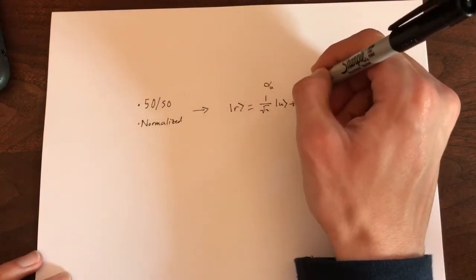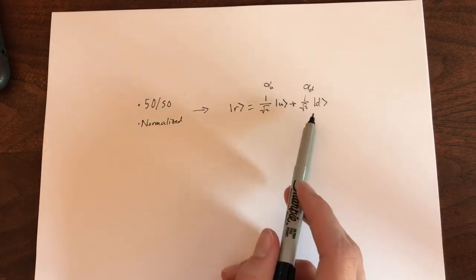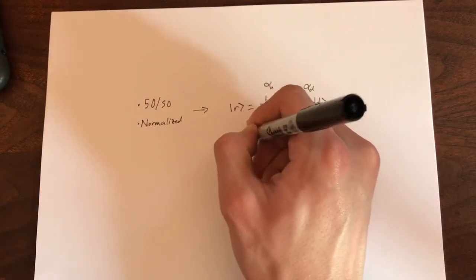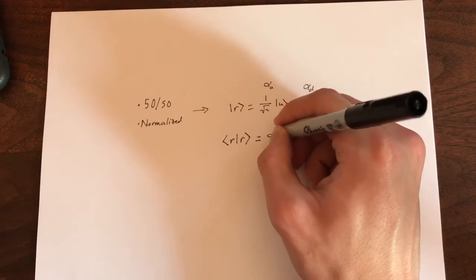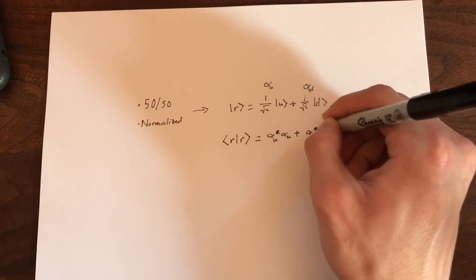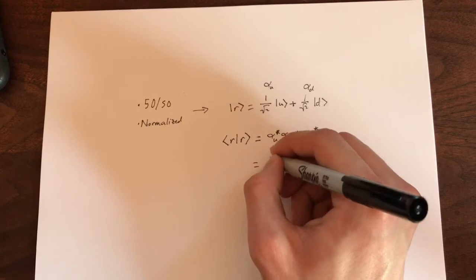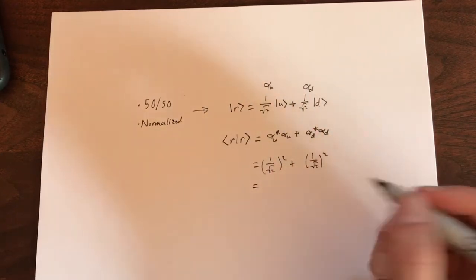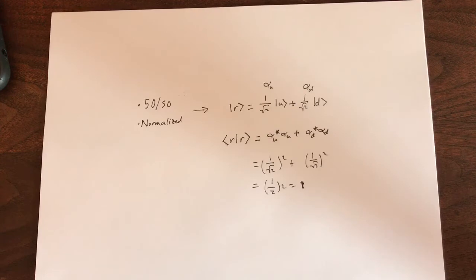This is alpha up and this is alpha down. Since these two are equal, we know that there must be a 50-50 chance of them being chosen. However, how do you know that it's normalized? Well, if we take the inner product of the vector with itself, we get the complex conjugate of alpha u times alpha u plus the complex conjugate of alpha d times alpha d, which is, since they're both real, their complex conjugate is the same as their value. So 1 over root 2 squared plus 1 over root 2 squared, which is 1 half times 2, which is 1. So it is normalized and it's 50-50 chance.